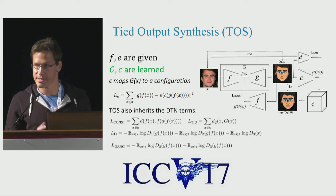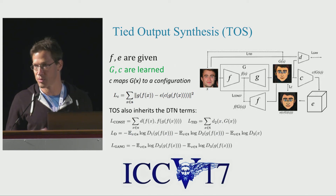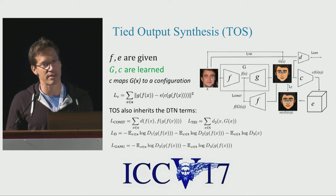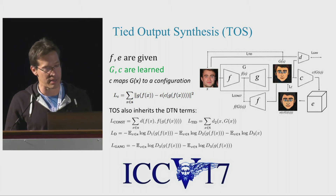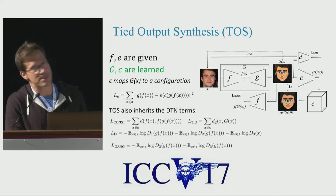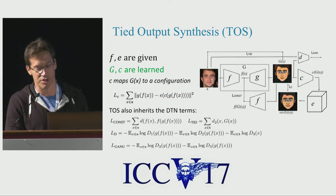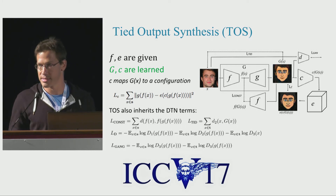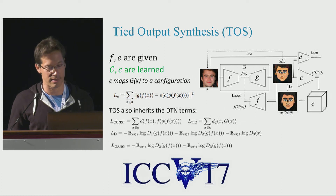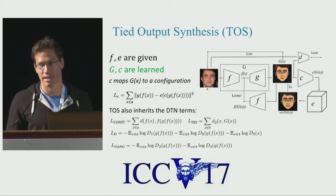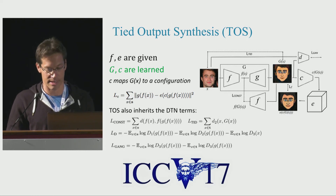This system of tied output synthesis inherits all the other constraints from the DTN system in our ICLR paper, including a GAN loss on the generated image G of X, and the F-constancy constraint stating that F of G of X is the same as F of X.